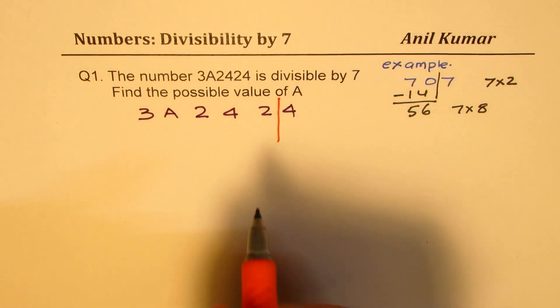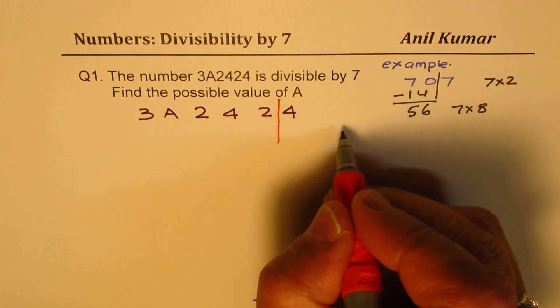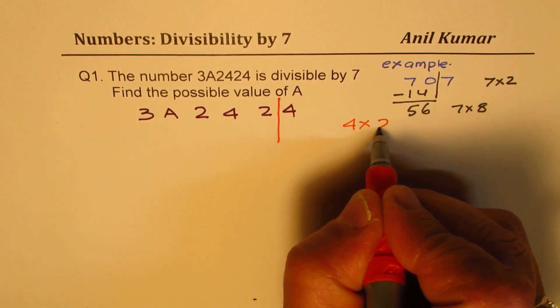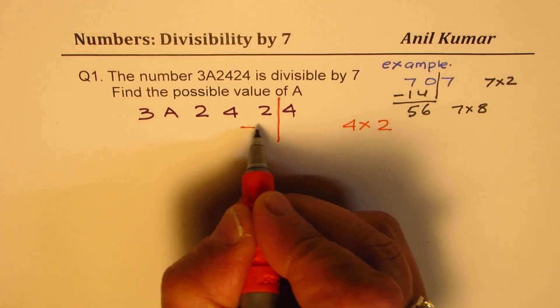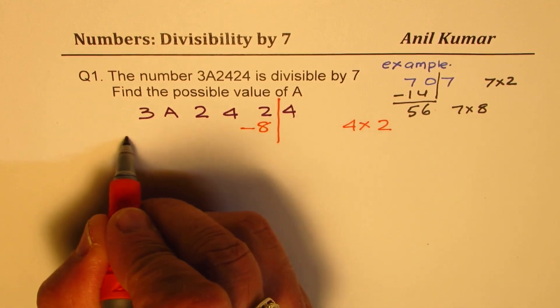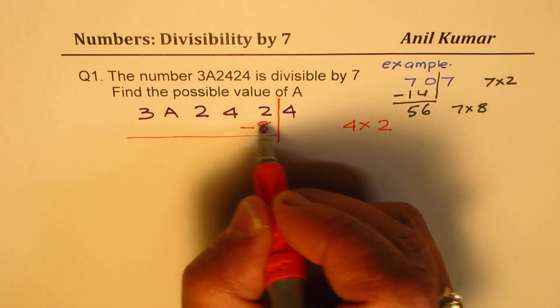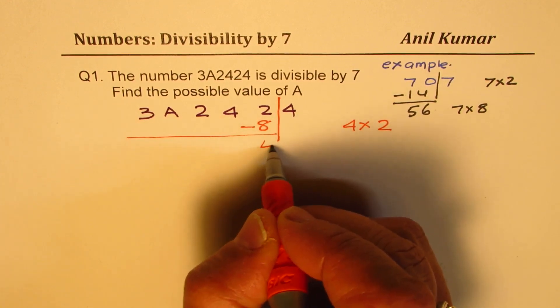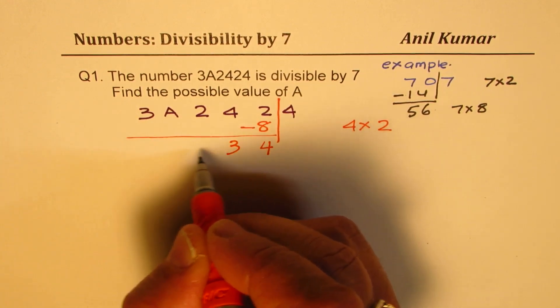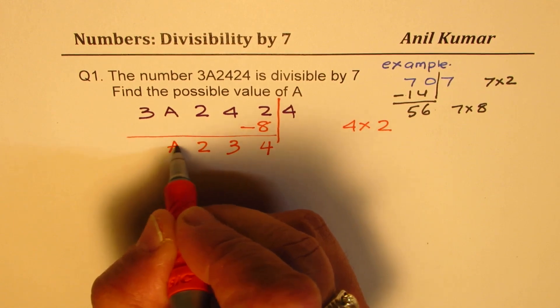So the last digit here is 4. So we'll multiply 4 by 2, we get 8, we'll take away 8 from remaining digits. Perfect. So taking from here 12, we get 4, we get 3 here, 2, A and 3.